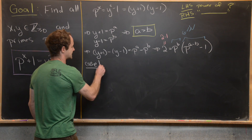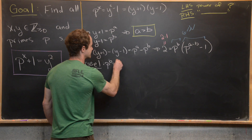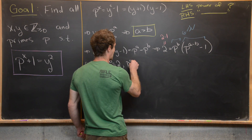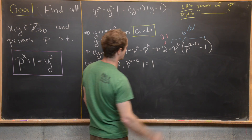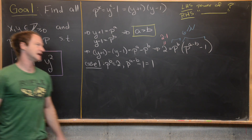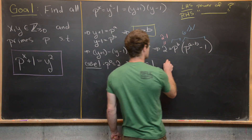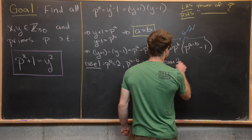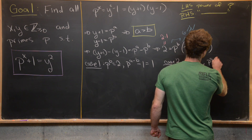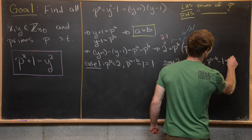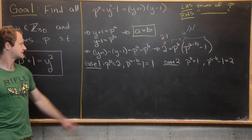This breaks into two cases. The only way to factor two into a product of two natural numbers is two times one. So our first case is p to the b equals two and p to the a minus b minus one equals one. Our second case is p to the b equals one and p to the a minus b minus one equals two.